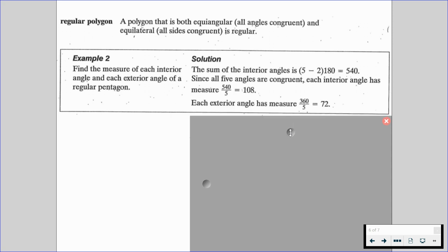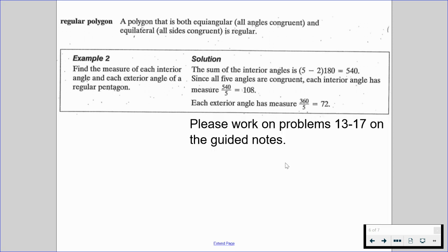And the exterior angle is going to be 360 because we know the sum is always 360. We're going to divide it by 5 because there's going to be 5 exterior angles, and we get 72. With this, please work on problems 13 through 17 on the guided notes and resume when ready to go through one last example.